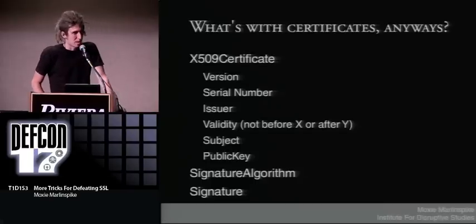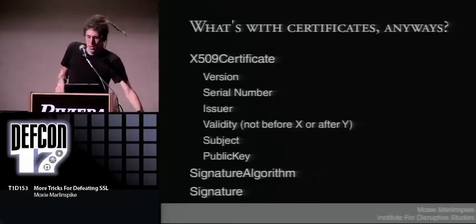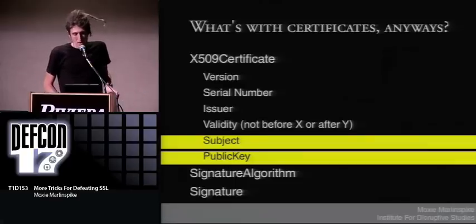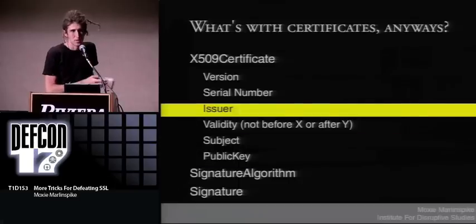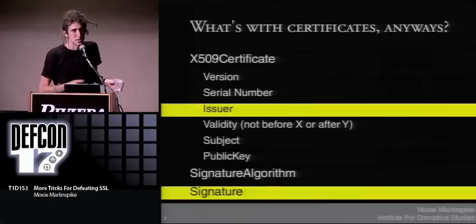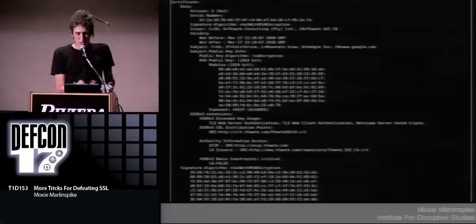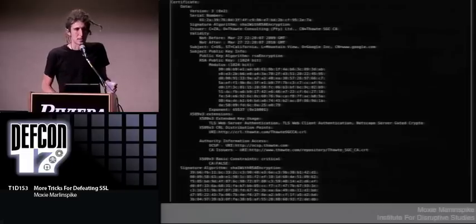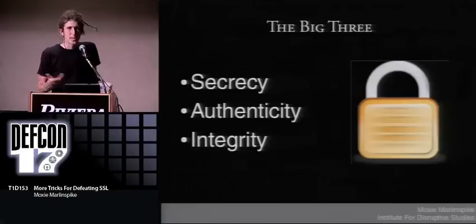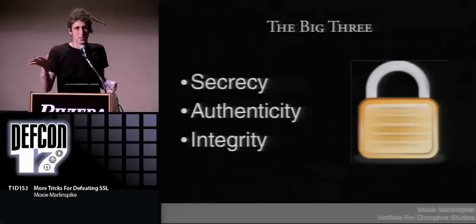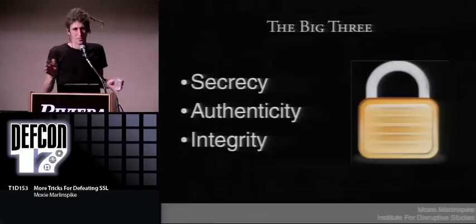Let's start thinking about that. What are certificates really? They're actually pretty simple structures. The basic point of a certificate is to identify some subject and convey that subject's public key. The certificate is thought to be good because it's issued by some issuer that people might think is trustworthy, and it's known to be authentic based on that issuer's signature. When designing a secure protocol, the three big things you're after are secrecy, authenticity, and integrity. Most people talk about secrecy — they think of encryption — but if you don't have authenticity and integrity, you don't have anything.